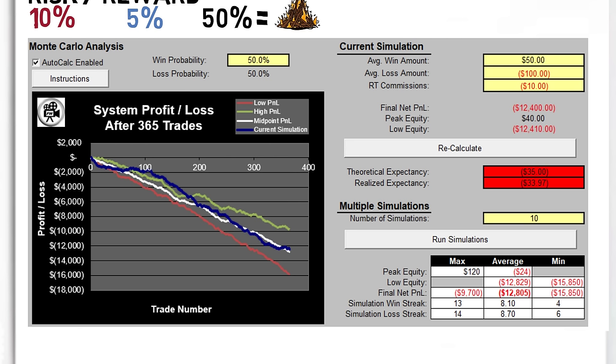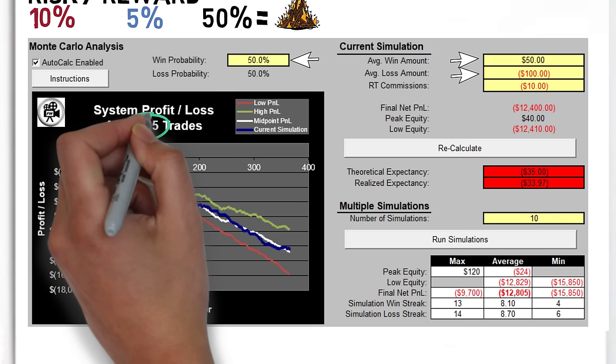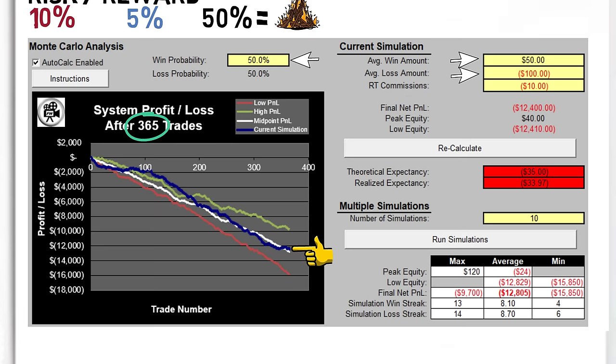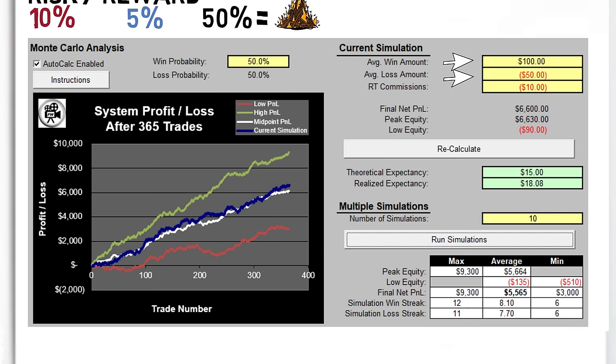Let's call a 10% loss $100, and a 5% win $50, with a 50% strike rate. If you took a trade every day, after 365 days you would have lost an average of $13,000. But if we flipped the ratio to risk 5%, looking to win 10%, with the same 50% strike rate, we would win on average over $6,000 over the same period.